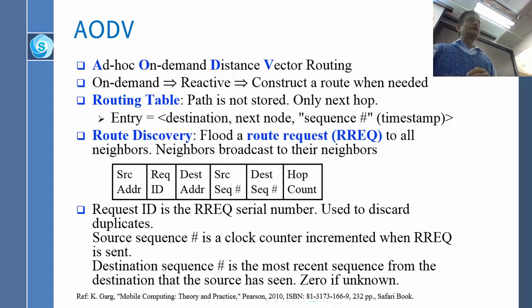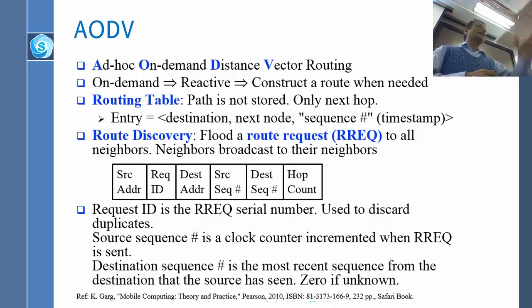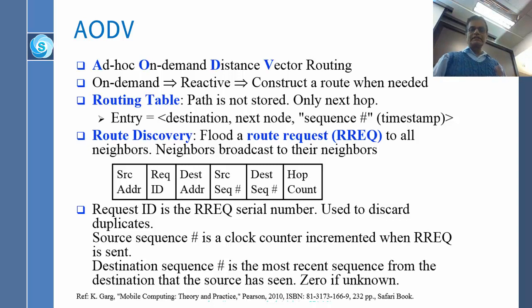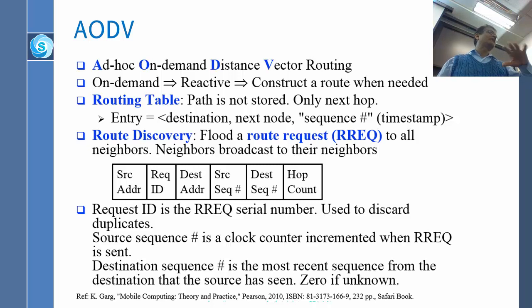Either the information is new, which is obtained from the sequence number, or the number of hops is lower. Suppose from time 5 I am saying he is at hop 10, and you say no, I know a path to him at hop 8 — then that is better. So there are two criteria: the sequence number (recency) and the hop count (distance). The RREQ ID is simply the request ID — if you get the same request again, number 5 again, you can throw it away because you already took care of number 5.